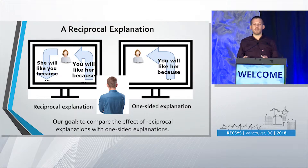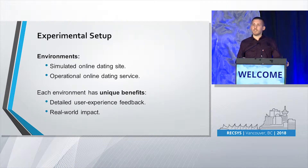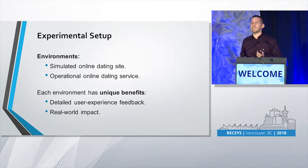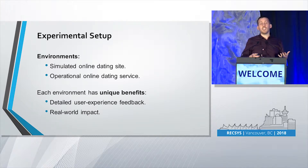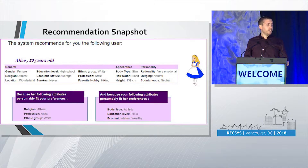In order to compare the effect of both kinds of explanation styles, we performed a sequence of three experiments. Two of these experiments were in a simulated online dating site, which we built specifically for this purpose. The third experiment was an operational online dating service, which I'll talk about later. The reason we decided to use both environments is because each one has their own unique benefits. The simulated online dating site allowed us to have more freedom, and we were able to collect more detailed user feedback about their user experience. And the operational online dating site, naturally, reflects the real-world impact more accurately.